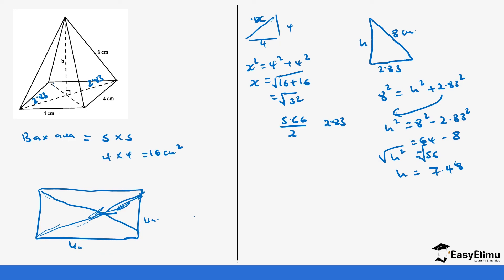Now we go back to our formula: one-third times base area times height, which is one-third times 16 times 7.48. So that is 16 times 7.48 divided by 3, which gives us 39.89 centimeters cubed.